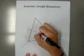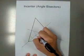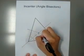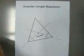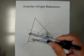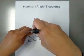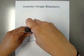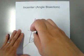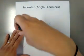Where those two angle bisectors meet is here, which is called the incenter. The incenter is the center of the circle that is inscribed in a triangle, so it should touch the three sides of the triangle.